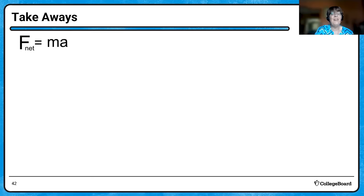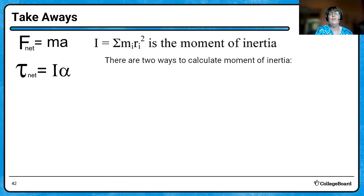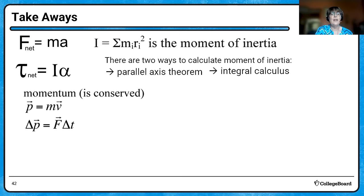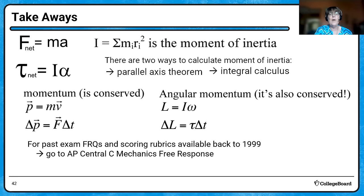Other things to take away: Newton's law — if there's a net force, the mass accelerates; when there's rotation, there's also net torque giving rise to angular acceleration. The moment of inertia — the sum of all little masses at their respective distance squared — can be calculated two ways: the parallel axis theorem or integral calculus. Linear momentum is conserved, and we saw that angular momentum is also conserved — very powerful conservation laws. Go back to the old exams on the AP Central site, check out the scoring rubrics, and work through as many as you can.